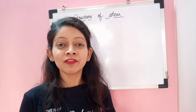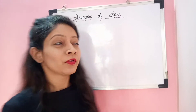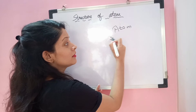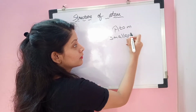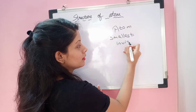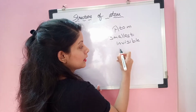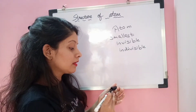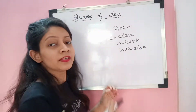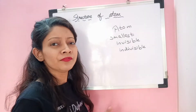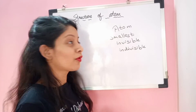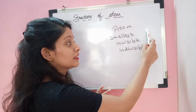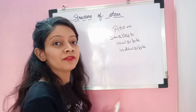Before moving towards the actual topic, we will see about what is atom. So atom is smallest, invisible, and indivisible in nature. That is, atom is smallest — it is very small in size. Invisible means we can't see atom by our naked eye. And indivisible means that atom cannot be divided into further particles. So atom has three characteristics: smallest, invisible, and indivisible in nature.